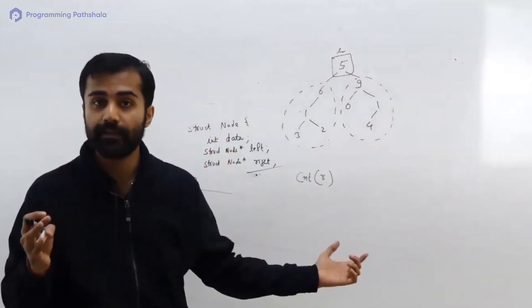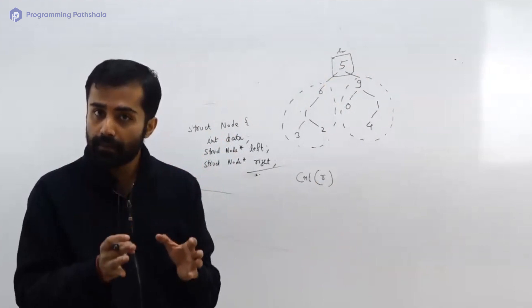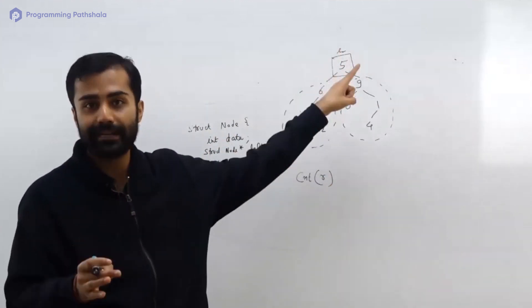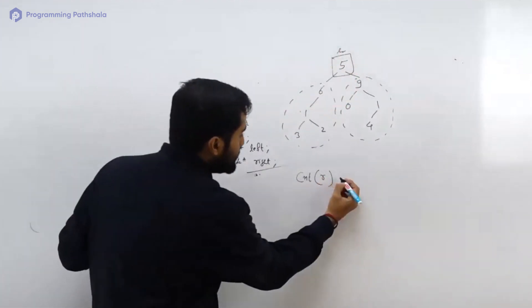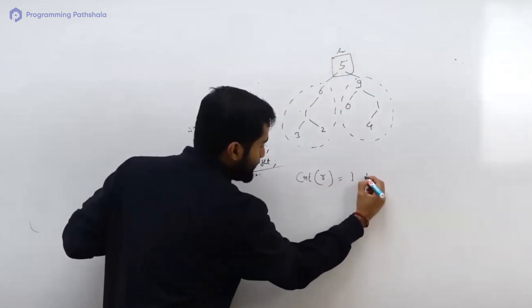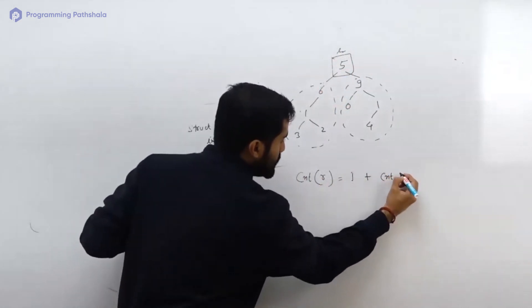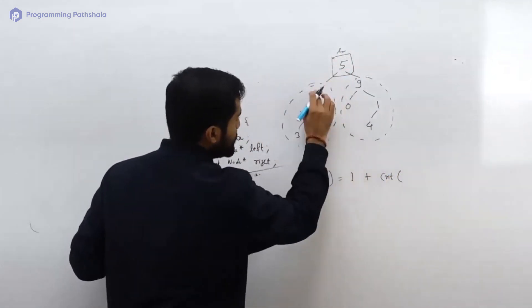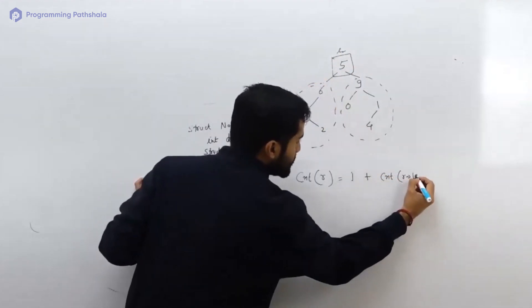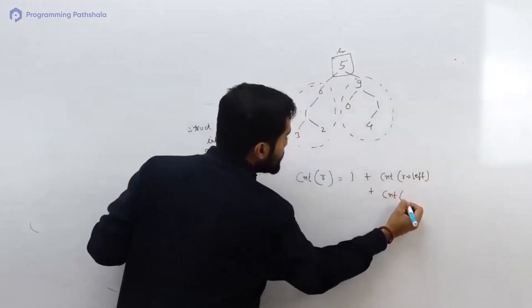Now definition of the function is very important. It returns me the number of nodes present in the tree which is rooted at r. Then I can say this is equals to 1 plus count of the nodes which is present in left subtree, which will be rooted at root.left, plus count of the nodes which is present in right tree, which will be rooted at root.right.